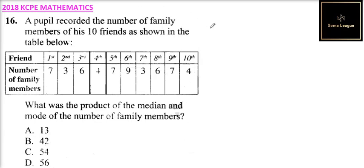Question number 16. We are told that a pupil recorded the number of family members of his friends as shown in the table below. So we have the row of the friends and the number of family members in our table.